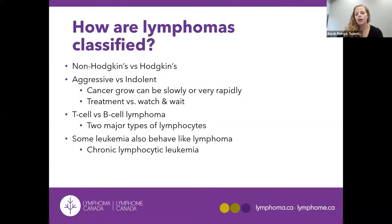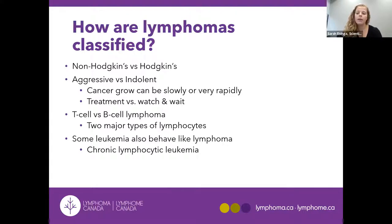Besides the general categories of non-Hodgkin's and Hodgkin's lymphoma, there are other ways to classify lymphomas. One of these ways is based on how quickly the lymphoma grows. Aggressive lymphoma is when the cancerous cells grow very quickly and usually cause the cancer to spread to other areas in your body, usually requiring an immediate start to treatment when diagnosed. The other type is indolent, which means slow growing — this type of cancer grows very slowly, and it's usually years before someone presents symptoms and doesn't always require treatment, but instead active monitoring and regular doctor checkups.